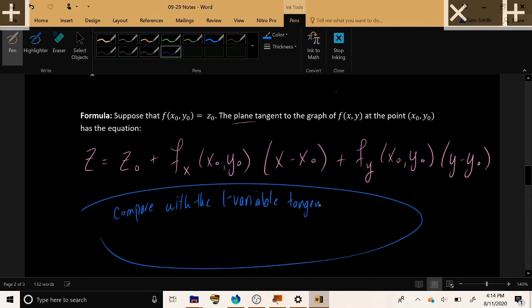Now compare that with the one variable tangent line equation, which was y equals f at a plus f prime at a, x minus a. Here we have the output variable y, and in ours we have the output variable z. The first quantity that we get is just the output at the given point, z naught, f of a.